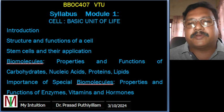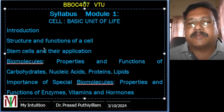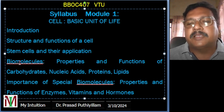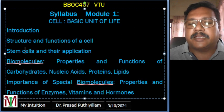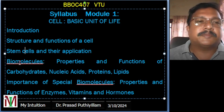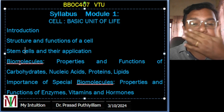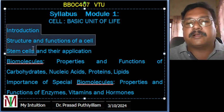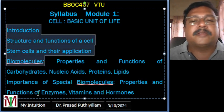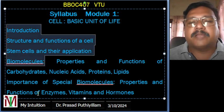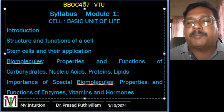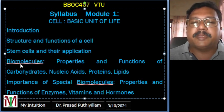The syllabus for BBOC 407 Module 1 covers: introduction to structural function of cells, stem cells, biomolecules, properties and functions of carbohydrates, nucleic acids, proteins, lipids, then enzymes, vitamins, and hormones. All four previous classes including the introduction to biomolecules have already been covered; properties and functions are what remain.